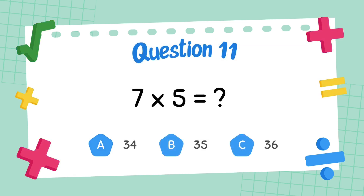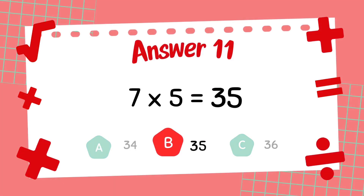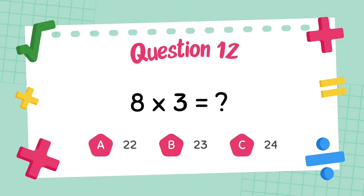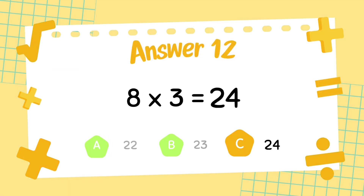What is 7 multiply 5? The answer is 35. What is 8 multiply 3? The answer is 24.